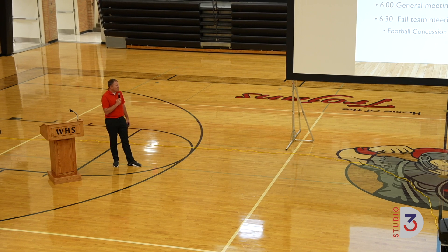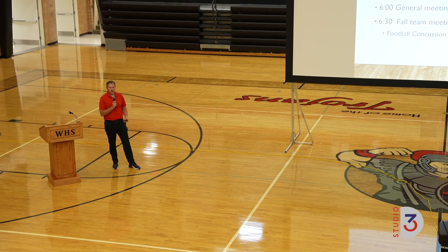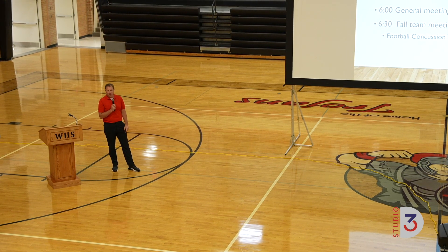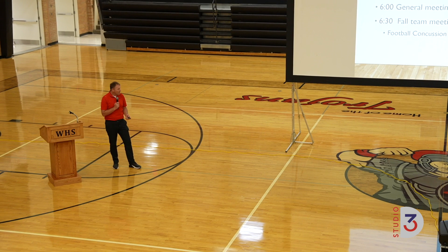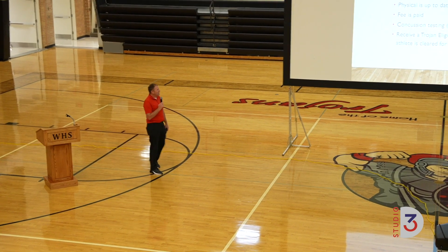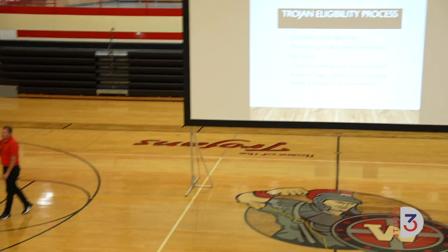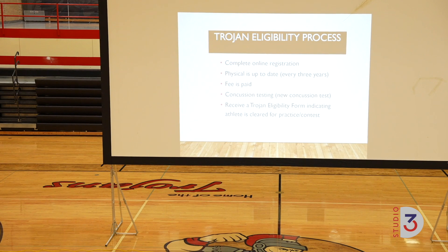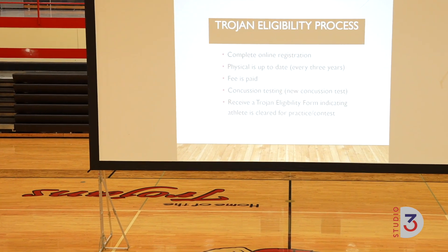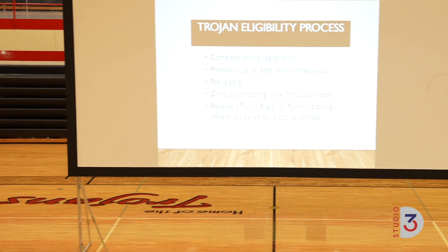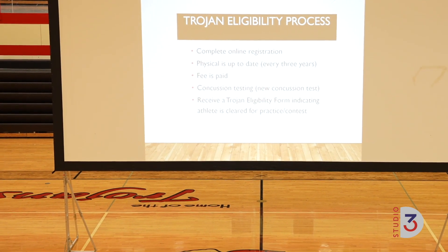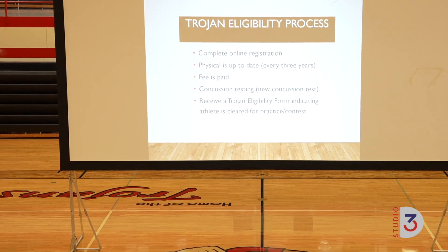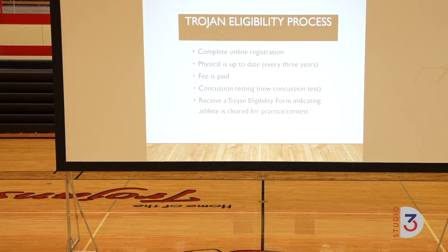If you're not in a fall sport, after this meeting make sure you're registered — there'll be people in the hallway or office to help you. Our eligibility process: we tried to make it simpler. You complete a registration online. Through the online registration you pick out the sports you want, add general information, upload your physical, and pay your fee. Those three things — the online registration, the physical, and the fee — should be done before your season starts.